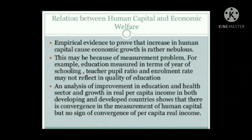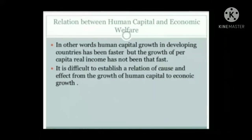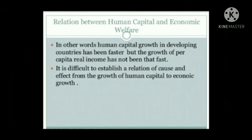There may be measurement problems — for example, education measured in terms of years of schooling, teacher-pupil ratio, and enrollment rate may not reflect the quality of education. An analysis of improvement in education and health sectors and growth in real per capita income in both developing and developed countries shows there are gains in the measurement of human capital, but no corresponding sign of growth in per capita income. In other words, human capital growth in developing countries has been faster, but the growth of per capita real income has not been that fast.